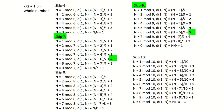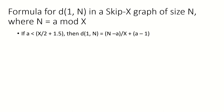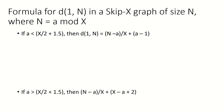This is verified by our observation. And we now have a formula for the distance between the first and last vertex in the skip x graph of size n where n is a mod x. If a is less than x over 2 plus 1.5 then the distance is found by this formula, and if a is greater than x over 2 plus 1.5 then the distance is found by that formula. And that's it.